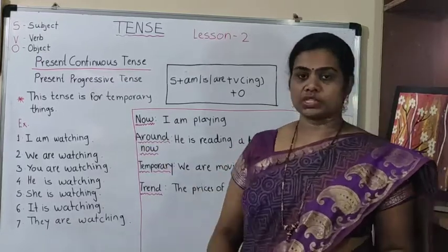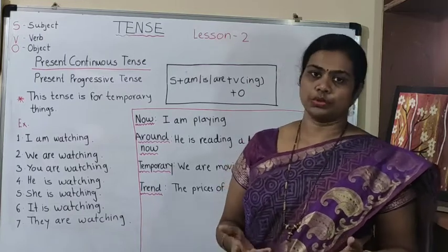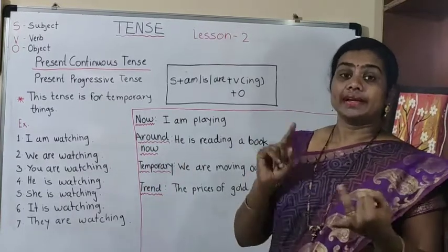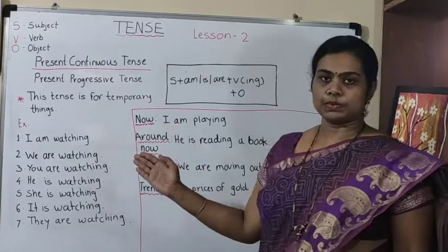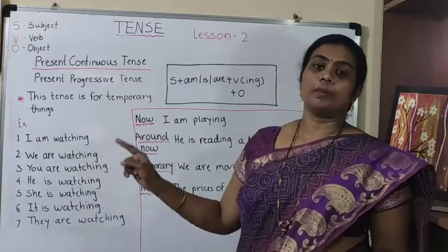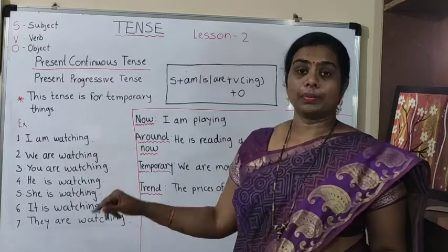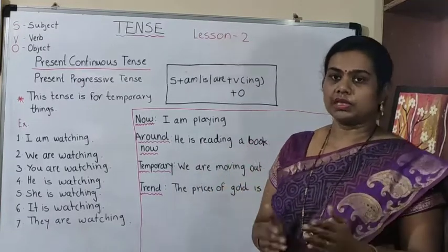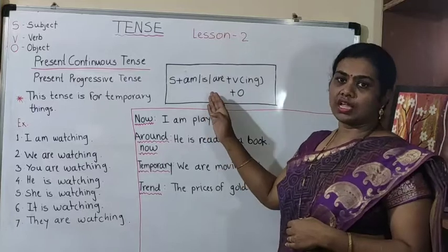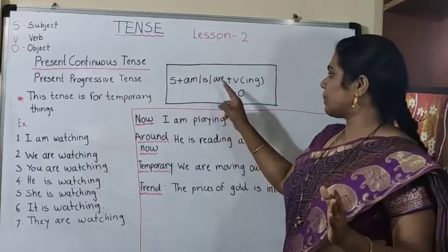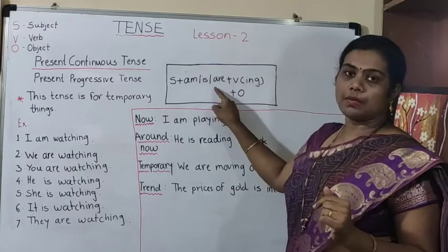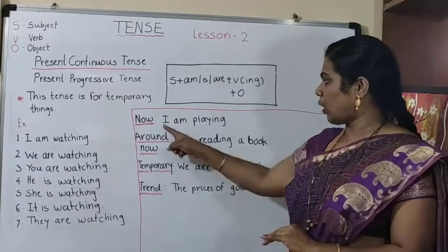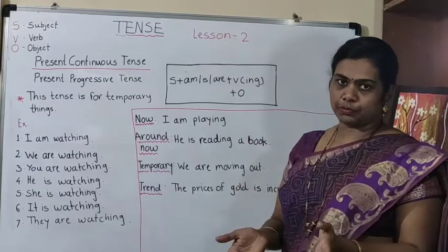So to recap the examples: I am watching, we are watching, you are watching, he is watching, she is watching, it is watching, and they are watching. In this case, the noun is the subject and Sharma is an example of a proper noun used as subject. The structure remains: Subject + am/is/are + verb-ing + object. Am, is, are are the 'to be' forms and helping verbs.